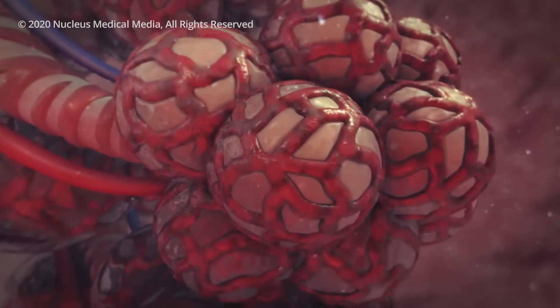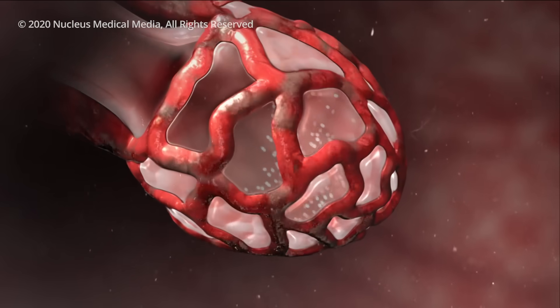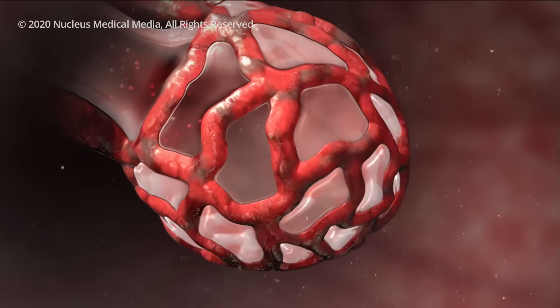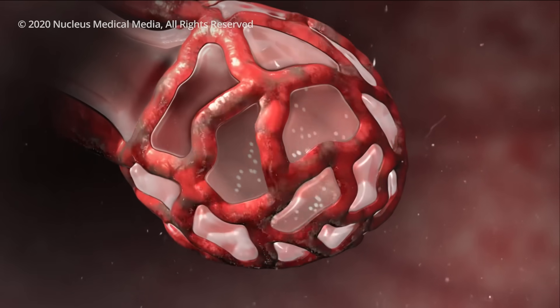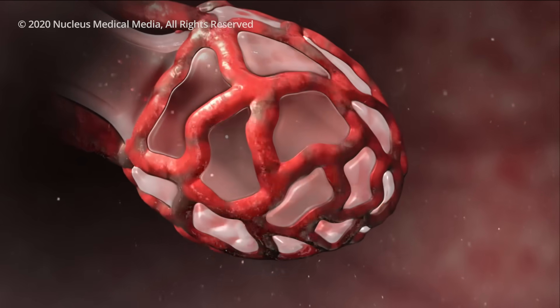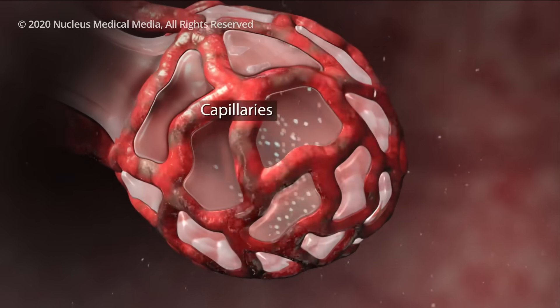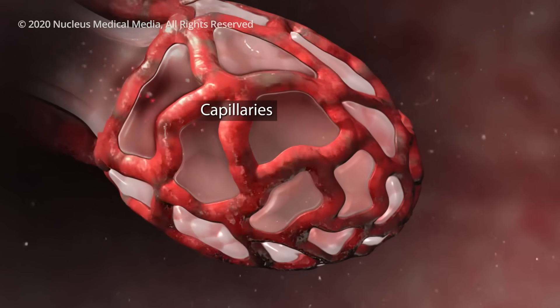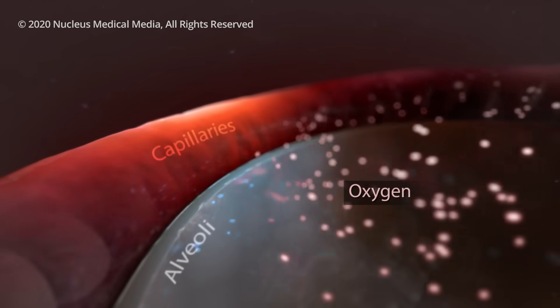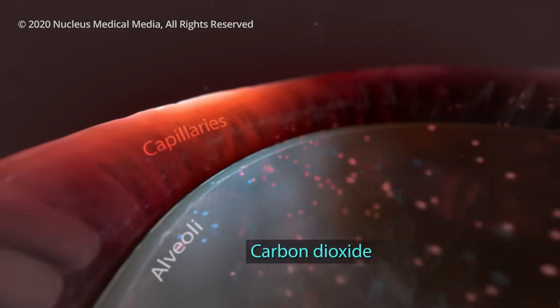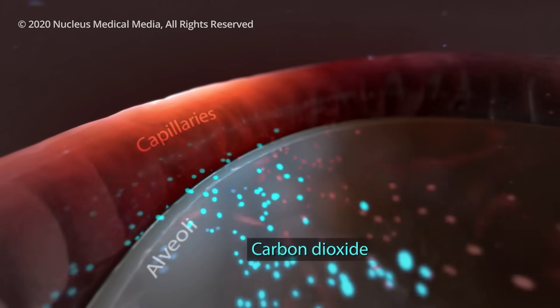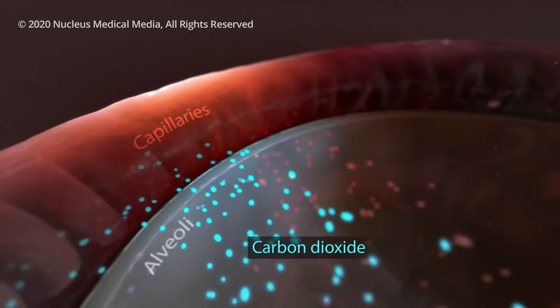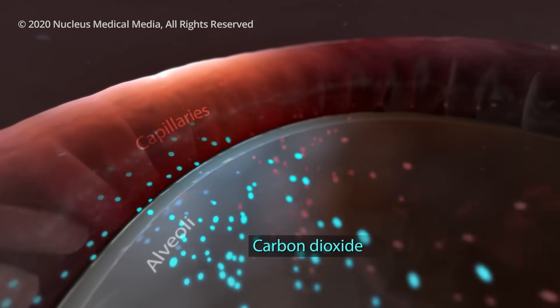Your airways and alveoli are flexible and springy. When you breathe in, each air sac inflates like a small balloon, and when you exhale, the sacs deflate. Small blood vessels called capillaries surround your alveoli. Oxygen from the air you breathe passes into your capillaries, and then carbon dioxide from your body passes out of your capillaries into your alveoli so that your lungs can get rid of it when you exhale.